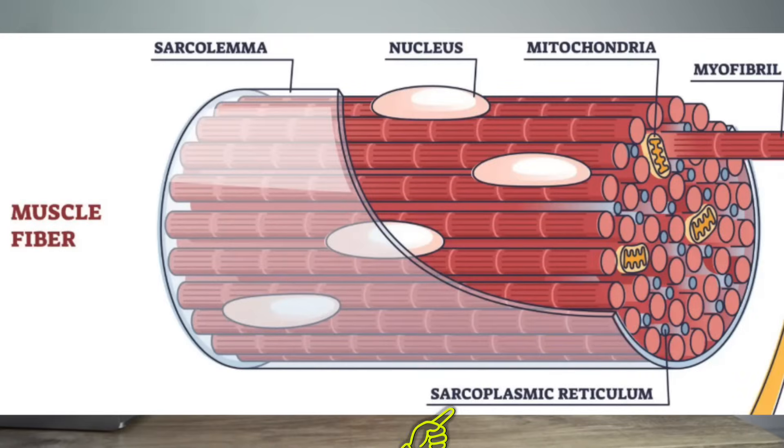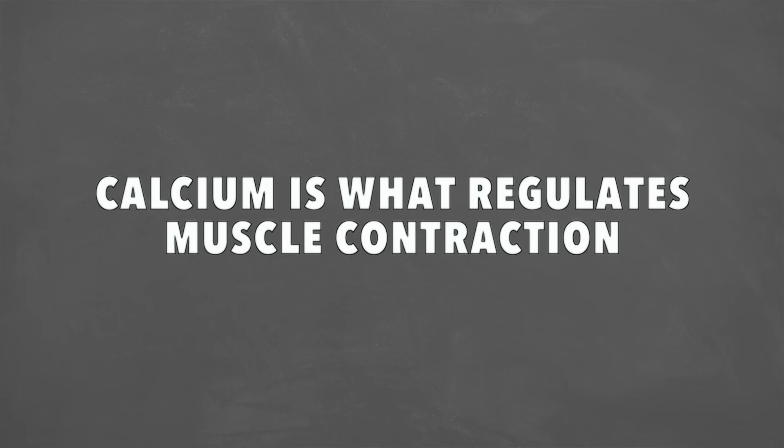That leads us to step number four: calcium release. We actually have a calcium bank in the muscle called the sarcoplasmic reticulum. This stores calcium and releases it whenever that signal is sent all around the sarcolemma. So the nerve signal went down to the muscle, crossed the neuromuscular junction, spread through the sarcolemma, and now activated the sarcoplasmic reticulum to release calcium throughout the muscle. Calcium is what regulates muscle contraction. Calcium sequestering proteins act like collectors that bring calcium back to the bank, and that process of releasing and retrieving calcium regulates muscle contraction.